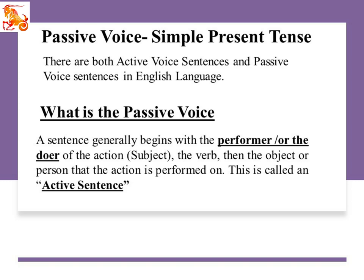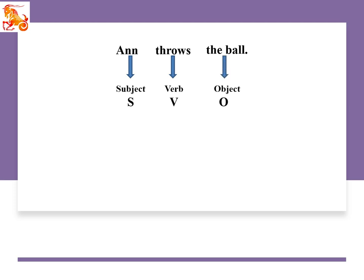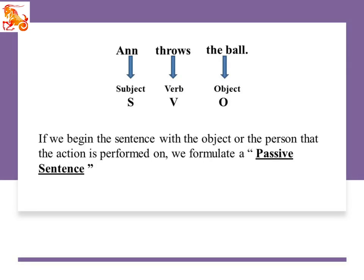Let's go to the definition. A sentence generally begins with the performer or the doer. Doer means the person who does the action, then the verb, and finally the object. Remember, object can be a thing or a person. Look at this example: Ann throws the ball. Here Ann is the subject — she is doing the action. Throws is the verb and the ball is the object.